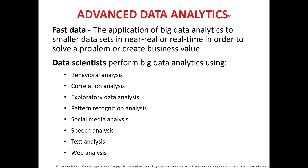Advanced data analytics. Fast data is the application of big data analysis to smaller datasets in near real-time or real-time in order to solve a problem or create business value. Data scientists perform big data analytics using behavioral analysis — using data about people's behavior to understand intent and predict future actions. Correlation analysis determines the statistical relationship between variables, often for the purpose of identifying predictive factors among those variables.